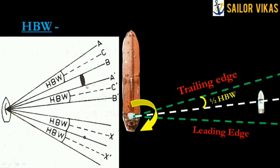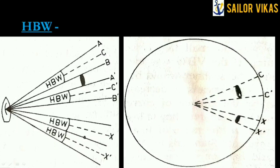In this example, the line joining B and A-dash represents the size of a target, and there is also a point target. When the radar paints the target, the paint increases by half of horizontal beam width, shown as areas C and C-dash on the radar screen. For a point target, the paint extends from X to X-dash — half horizontal beam width on each side — making the total paint size equal to the full horizontal beam width.